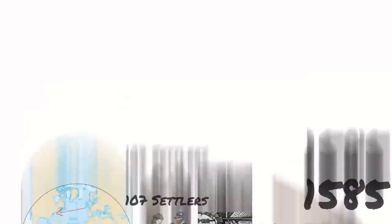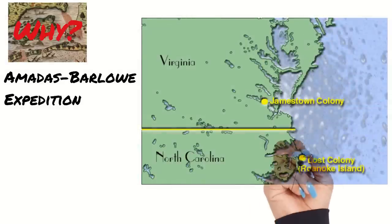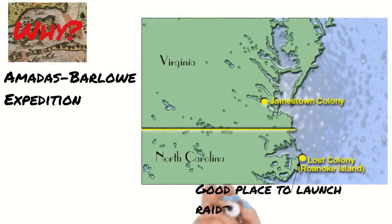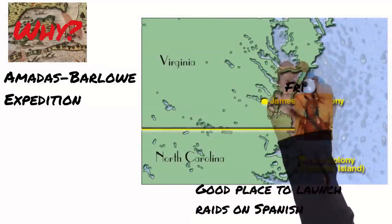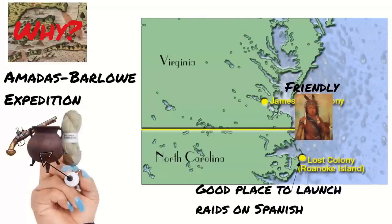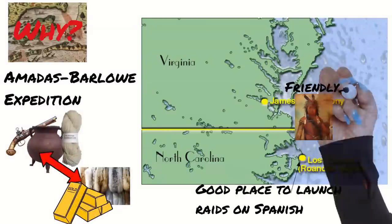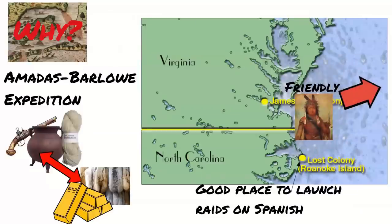So why did they choose Roanoke? Ultimately Roanoke was chosen after the Amadas Barlow expedition, which was sent by Raleigh to investigate probable locations. Roanoke was chosen because of its strategic benefits for launching raids on Spanish colonies and because the local indigenous people seemed friendly. The idea was that the colonists would be able to barter items such as weapons, cooking pans and wool and cloth for items like furs and gold with the indigenous people. The Algonquian Indians who were living on Roanoke came across as friendly and two of them travelled to England to encourage the English to settle there.